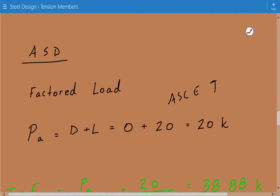And that's dead load plus live load. So our dead load is, we don't have a dead load, so it's just going to be equal to live load, and that's 20 kips.